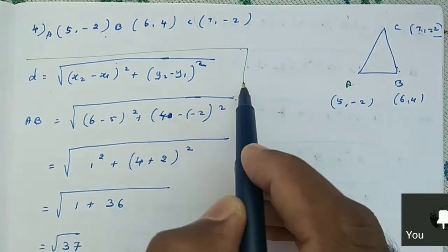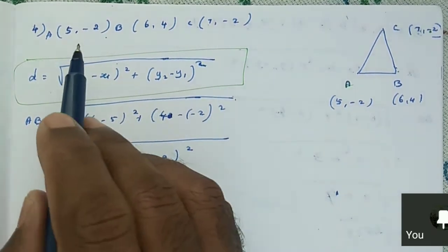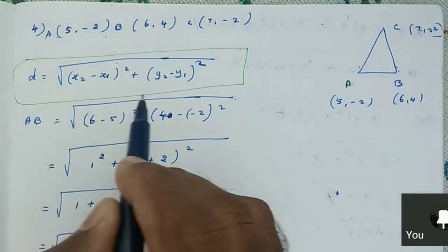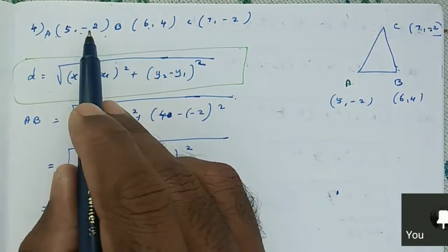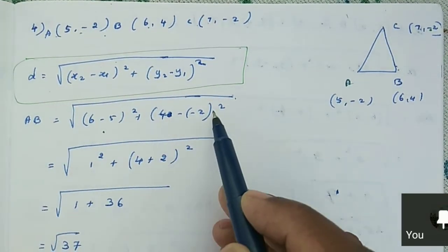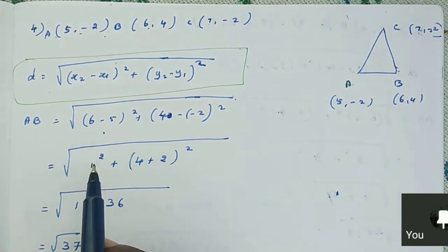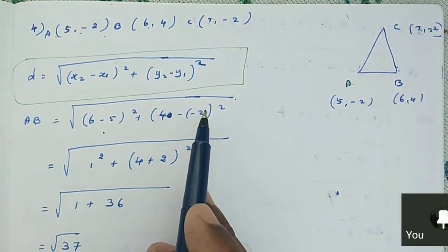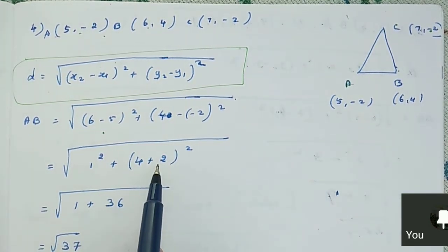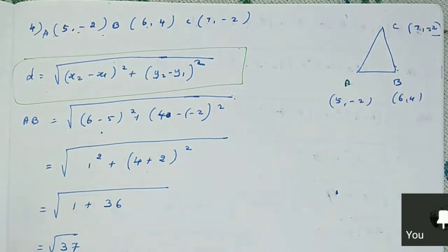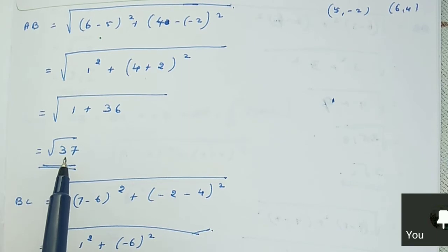The distance formula is d = √[(x₂-x₁)² + (y₂-y₁)²]. So AB = √[(6-5)² + (4-(-2))²] = √[(1)² + (6)²] = √[1 + 36] = √37.